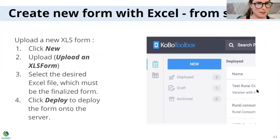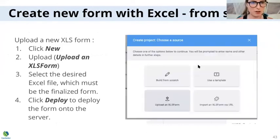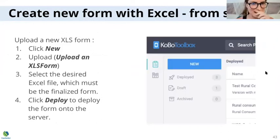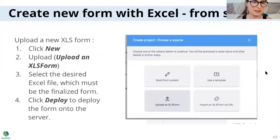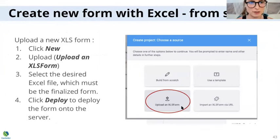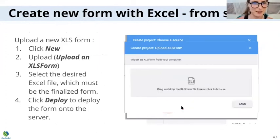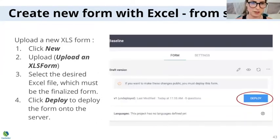You can also create a new form in Excel from scratch. You would click 'New' on the home page of Kobo Toolbox on your online account and select 'Upload an Excel form' rather than build from scratch, which Diane demonstrated earlier. Then you would locate the form that you created in Excel, upload it onto Kobo, and then click deploy — and the form will be ready for data collection.